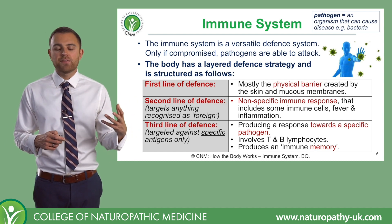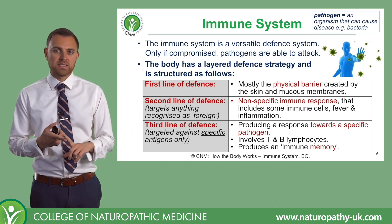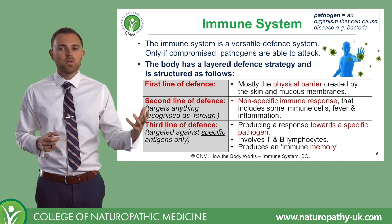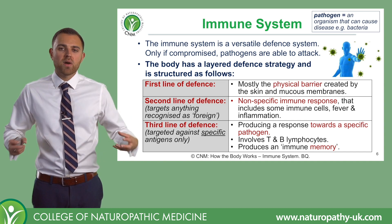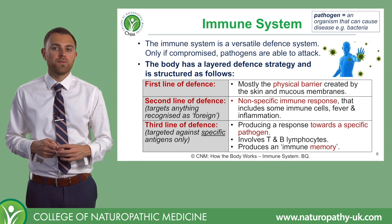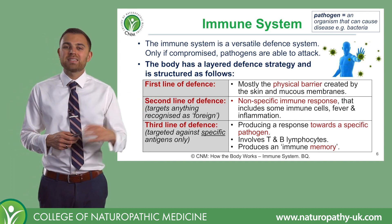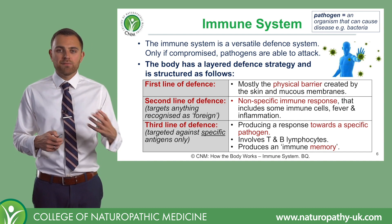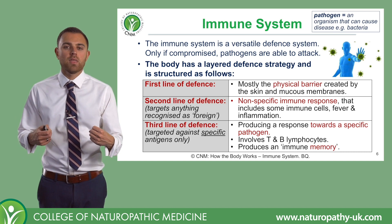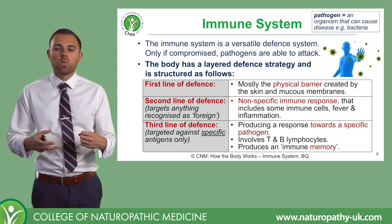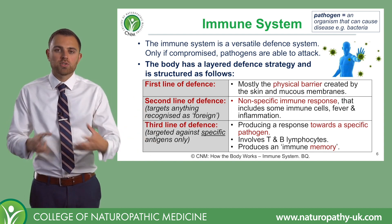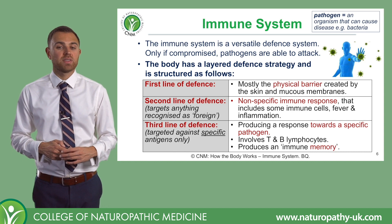The second line of defence includes things like some white blood cells, particularly white blood cells that eat foreign cells. But it also includes fever, where the body temperature elevates to make an environment that's not hugely favourable for these foreign cells, as well as inflammation — a very non-specific process that works to attract and draw in lots of white blood cells to the area.